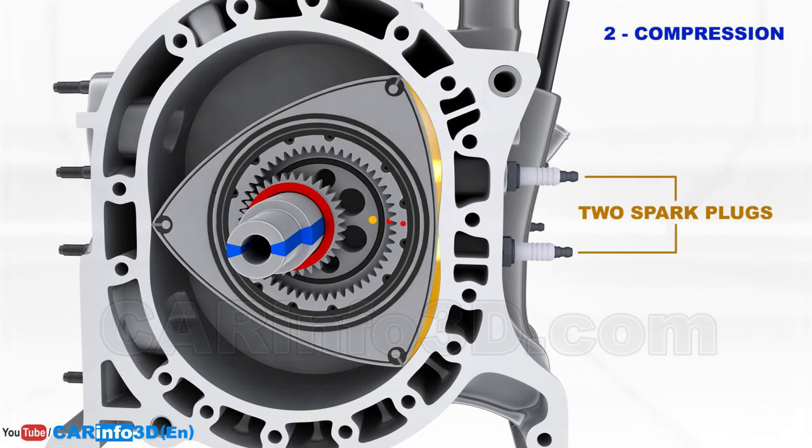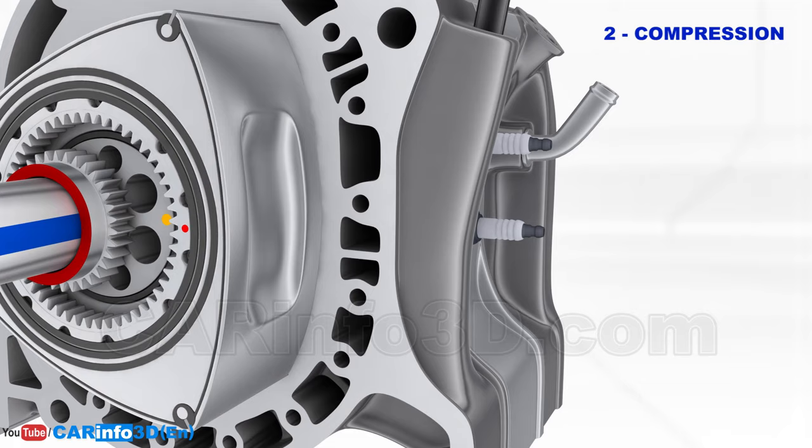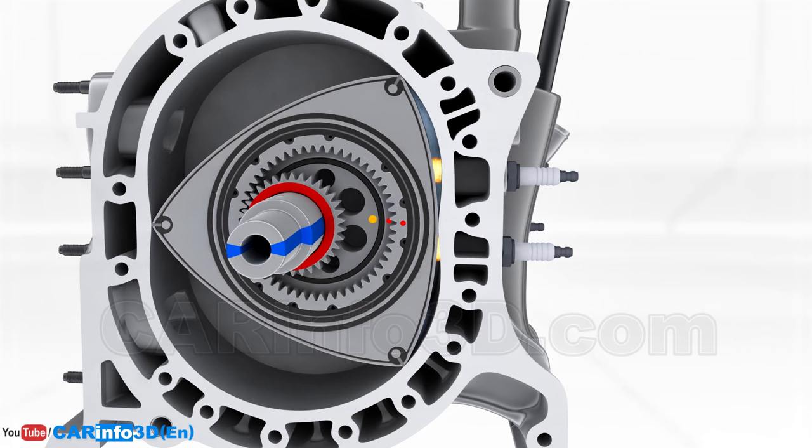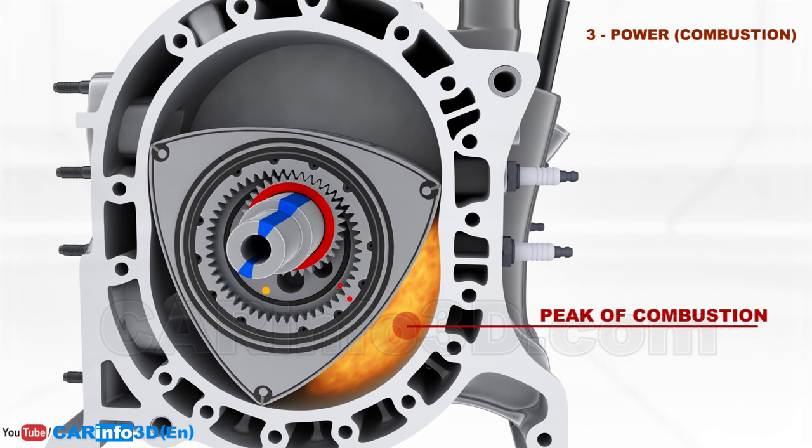You can see that spark plugs are recessed into the rotor housing rather than sticking out. Besides, the combustion chamber is formed by a recess on each side of the rotor. The third stroke corresponds to the peak moments of combustion. This raises the temperature and generates a buildup of expanding gas pressure. Because of the pressure, the rotor rotates the eccentric shaft, thereby converting heat energy into mechanical work.